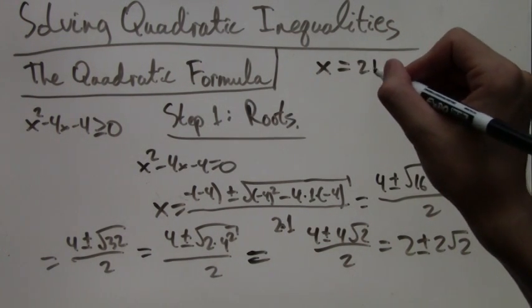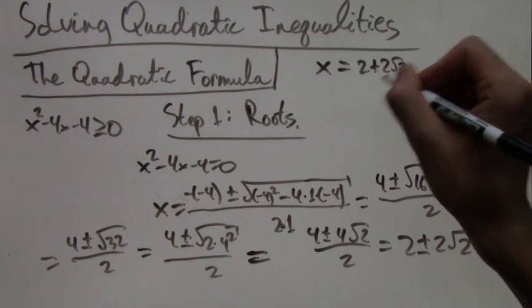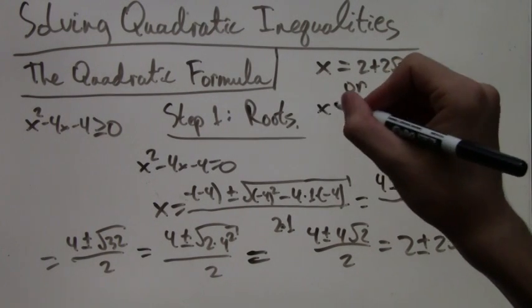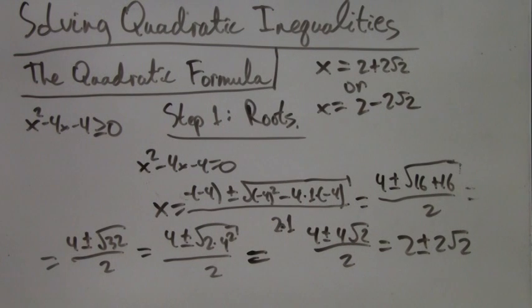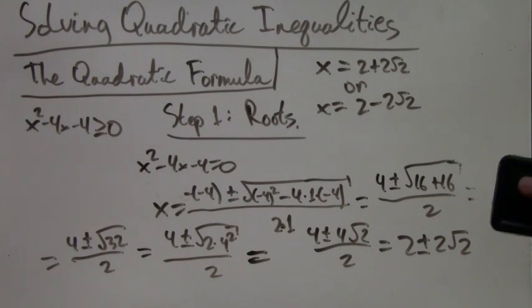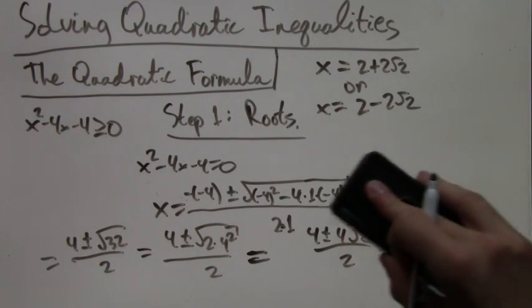So we have two roots: x equals 2 plus 2 root 2, or x equals 2 minus 2 root 2. Alright, so now we have the roots. Where do we go next?